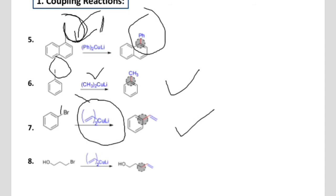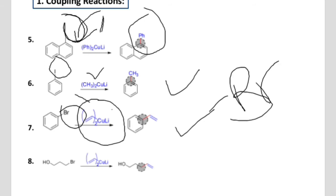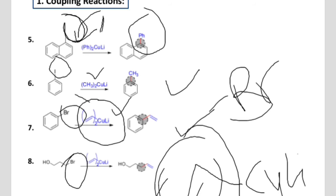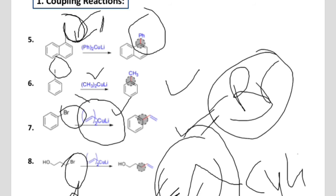In the third example, it is a Gilman reagent and it will replace bromine — bromine will leave, and in the position of bromine, the Gilman reagent will be attached. In the next example, a similar case: bromine will be removed and this part will react on this side.